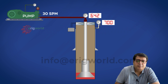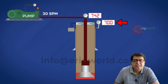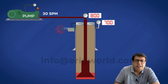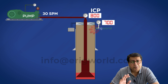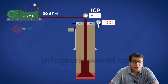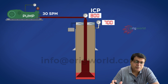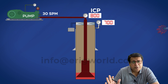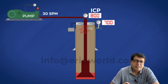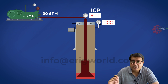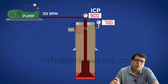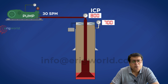We bring the pump to kill speed at 30 SPM, holding casing pressure constant, and the drill pipe will read ICP. Thumb rule number one is done — I brought my pump to kill speed holding casing pressure constant and drill pipe will increase to ICP. Now thumb rule number two says to keep BHP constant, keep the fluid column constant.